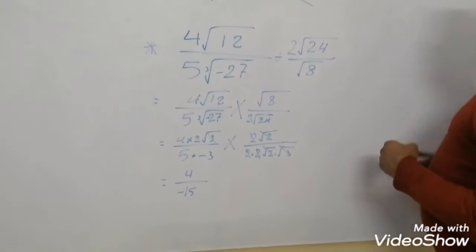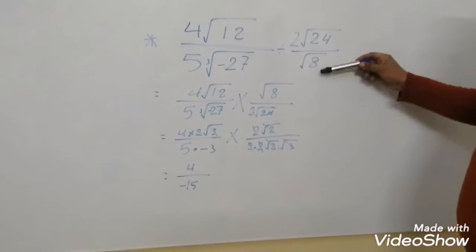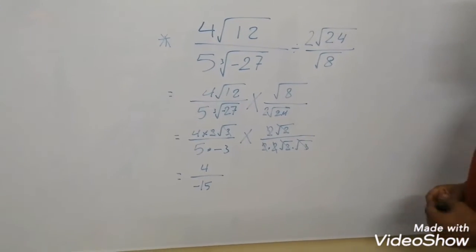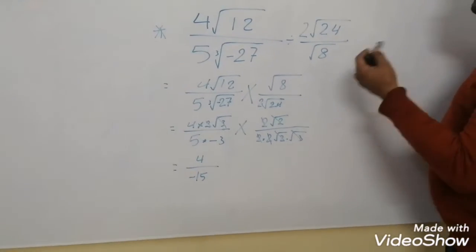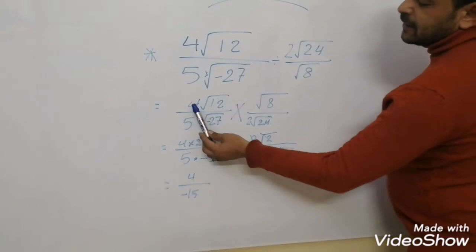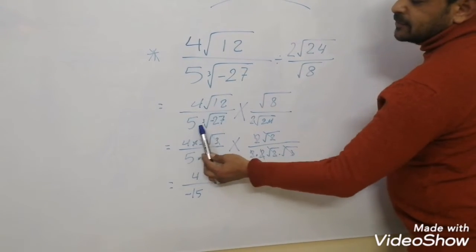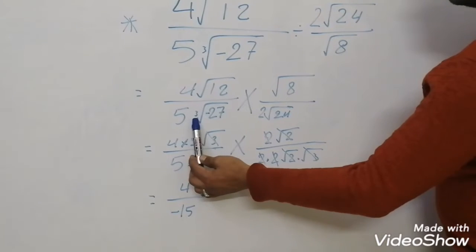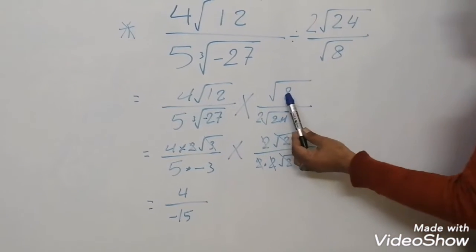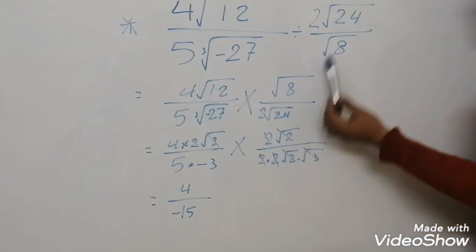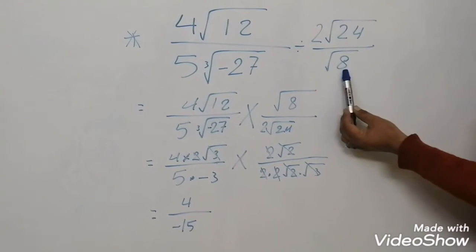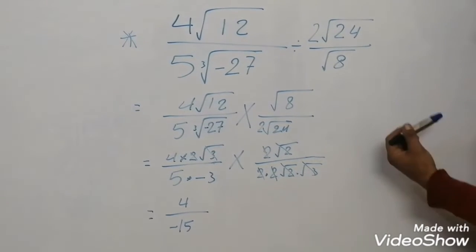The second step is to go to the bottom as we move to the bottom. So we have to go to 4th to 12th to 5th to 27th to 27th to 25th to 24th to 24th to 24th.